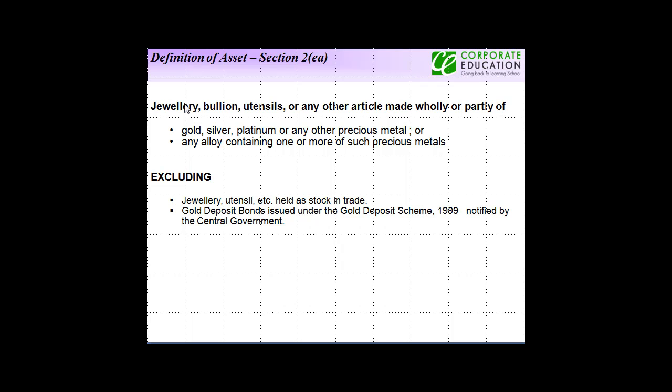Moving on to the definition of asset, we now see about jewellery, bullion, utensils or any other article made partly or wholly of. So if there is jewellery that is included within the definition of asset, a bullion is included within the definition of asset, utensils are also included within the definition of asset, or any other article other than these three made wholly or partly of.